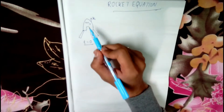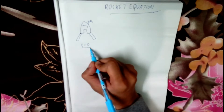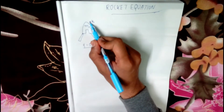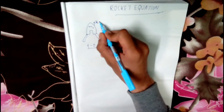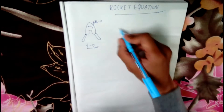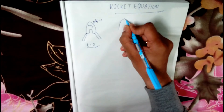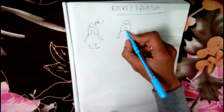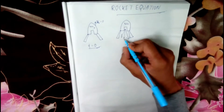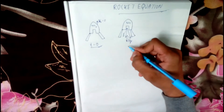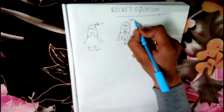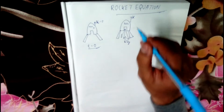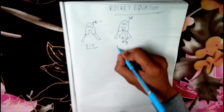We have a rocket of mass m0, which is the initial mass, and at time t equals zero its velocity is zero. So the initial velocity is zero and mass is m0 at t equals zero. In the second case, the rocket still has mass m0 but the fuel has started burning. The exhaust is coming out in the opposite direction to which the rocket is proceeding, with velocity vg, and the rocket is proceeding at velocity v. It now has mass m at time equals t.